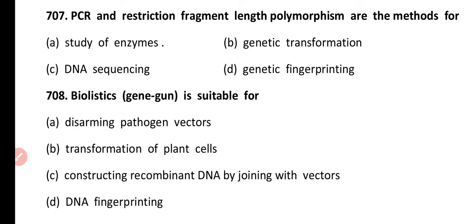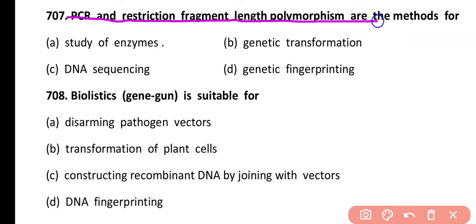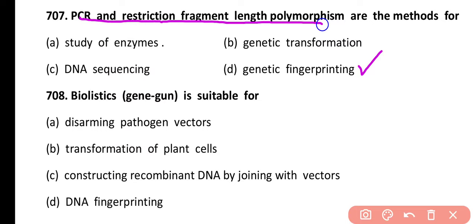Question 707. PCR and restriction fragment length polymorphism are methods for study of: enzymes, genetic transformation, DNA sequencing, or genetic fingerprinting. Correct answer is option B. PCR and restriction fragment length polymorphism are methods of genetic fingerprinting or genetic profiling.